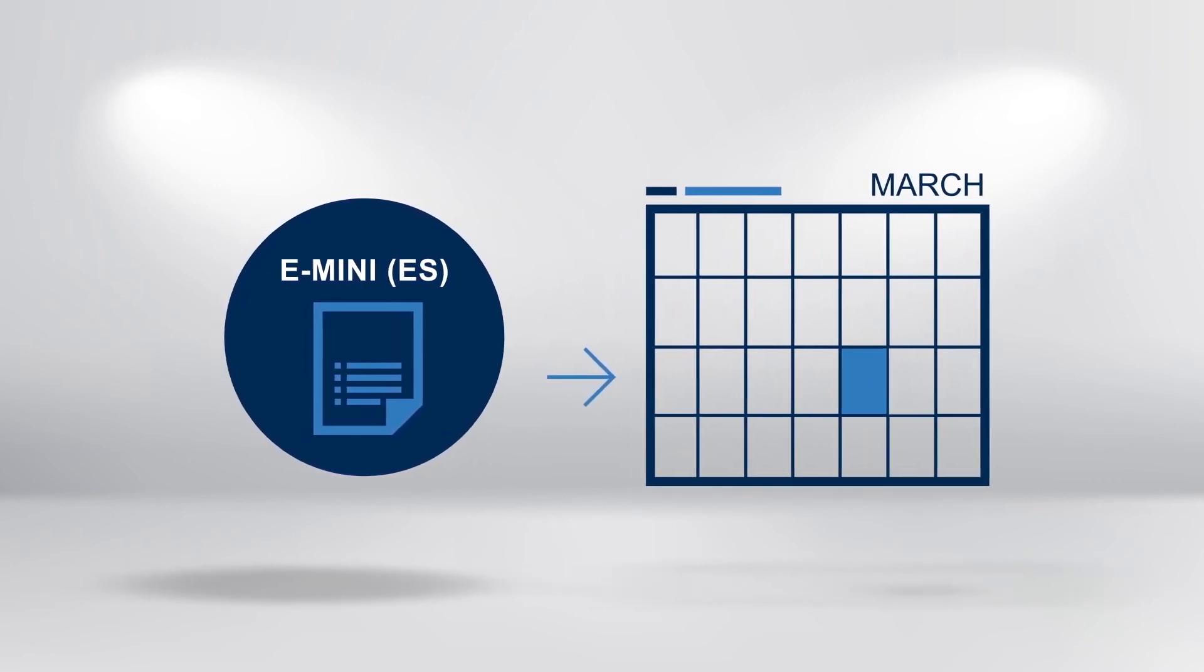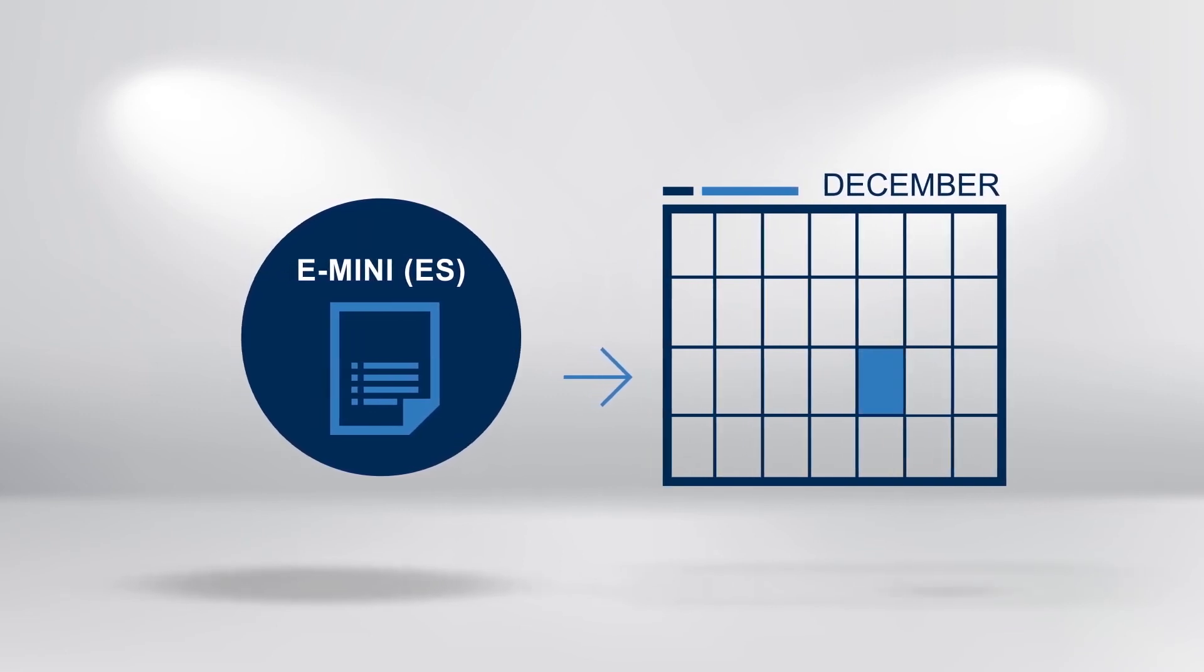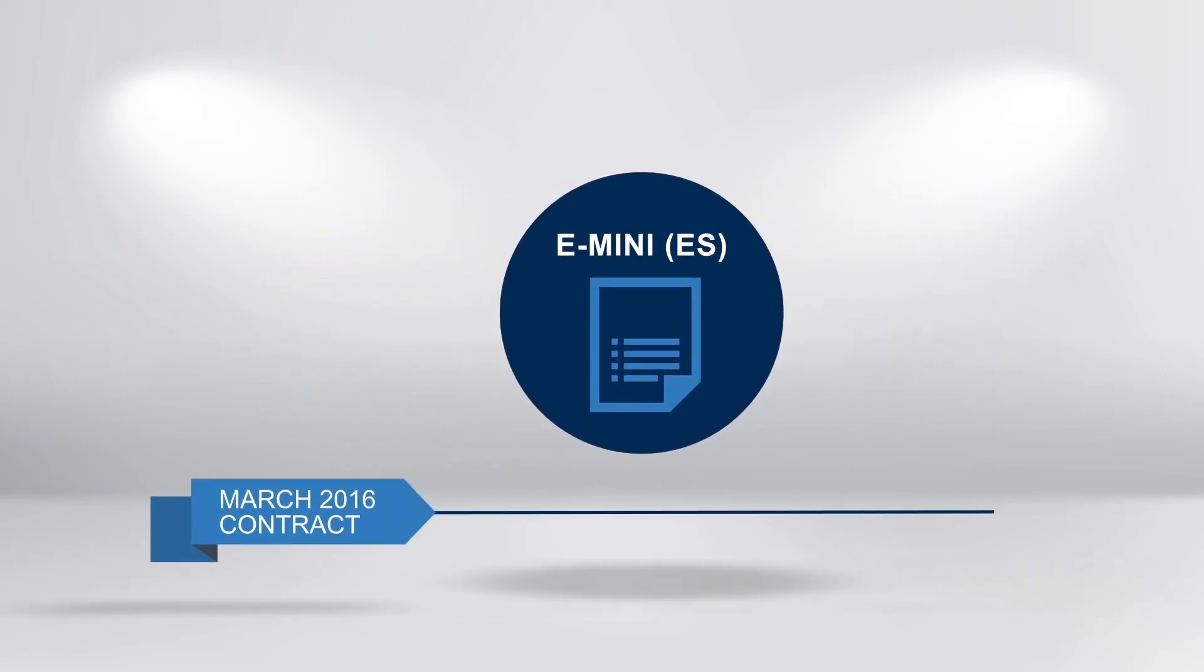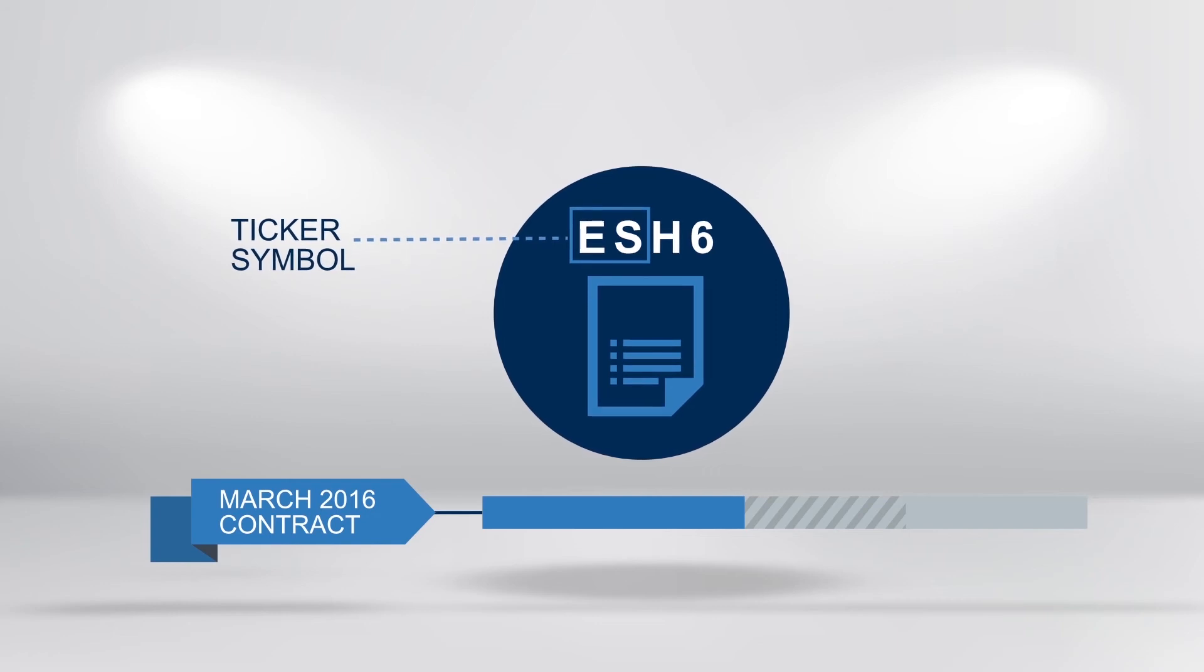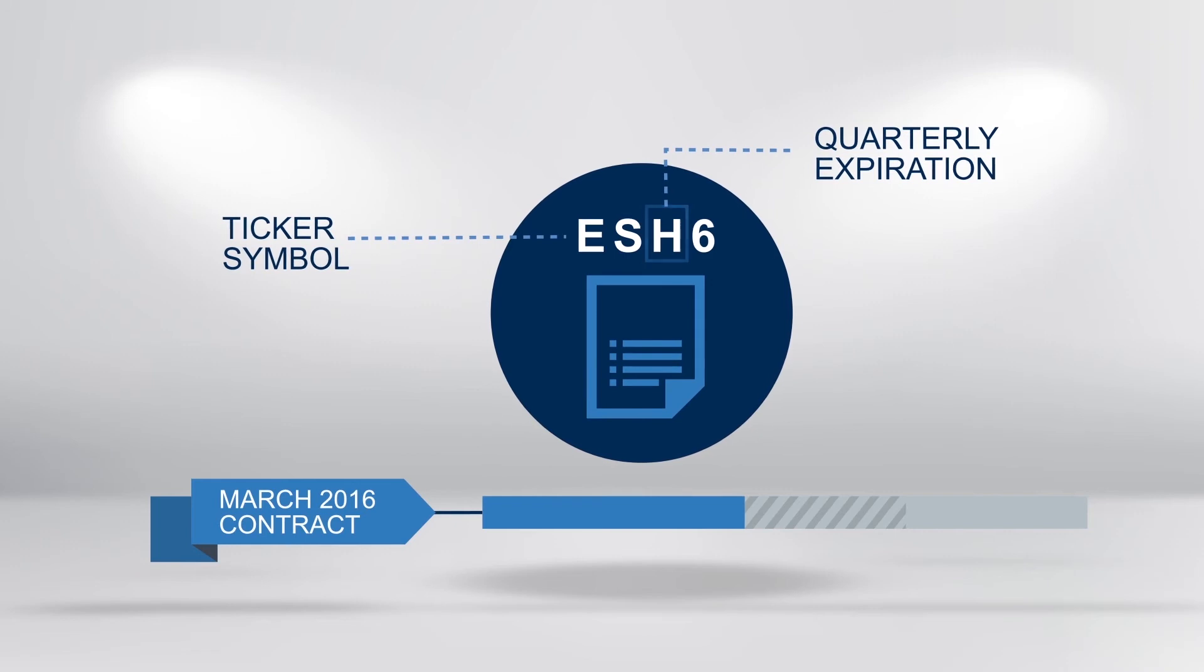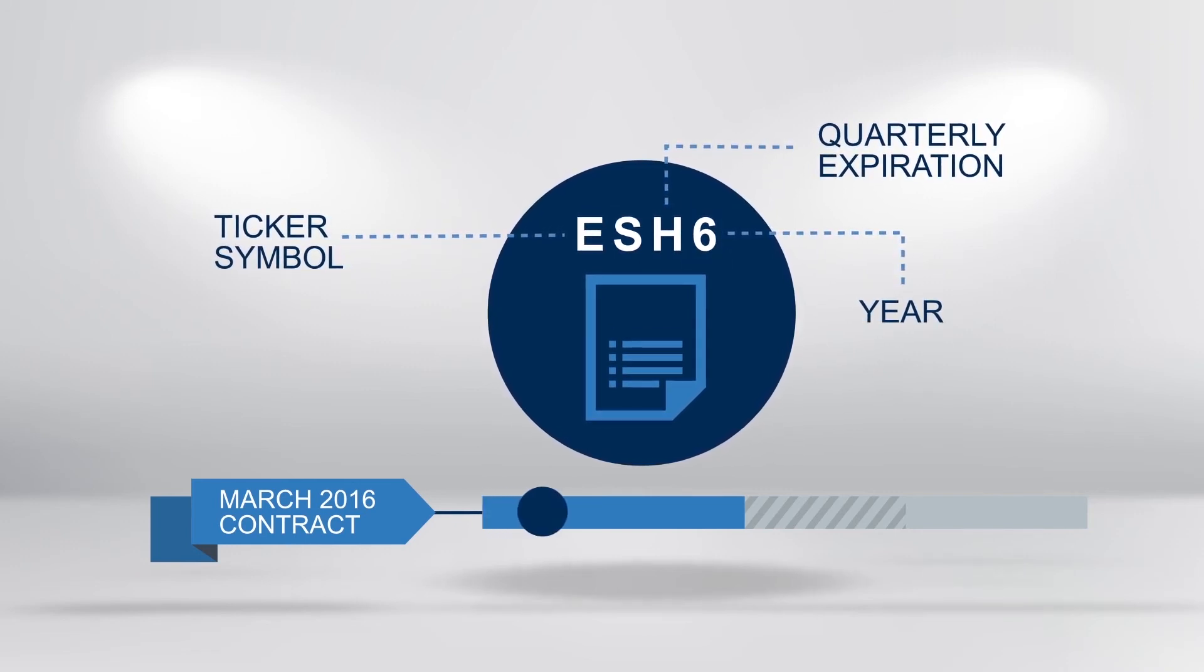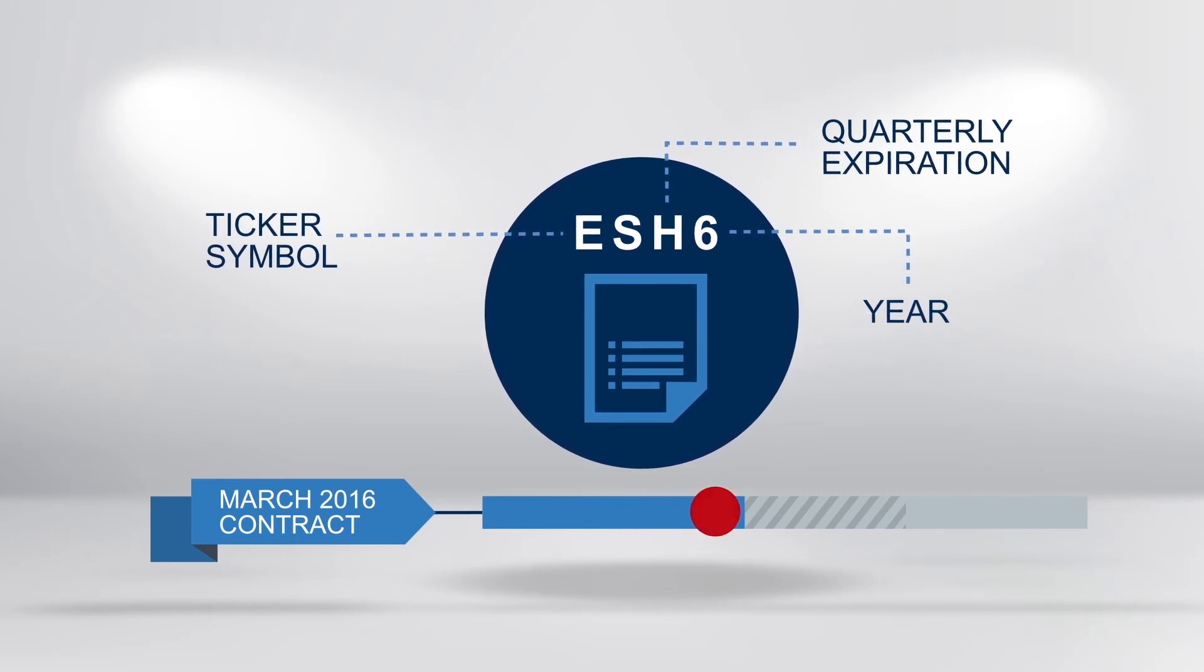The e-mini's March 2016 contract would be identified as ESH6, where ES is the ticker symbol for the underlying, H is quarterly expiration of March and 6 is the year. That contract would also cease to trade on past the third Friday in March.